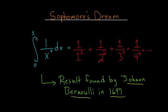So in this problem, we have the integral from 0 to 1 of 1 over x to the x dx, and Bernoulli was able to show that this integral is equal to 1 divided by 1 to the first power, plus 1 over 2 to the second power, plus 1 over 3 to the third power, and so on.